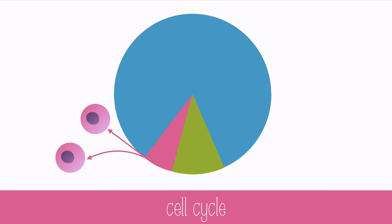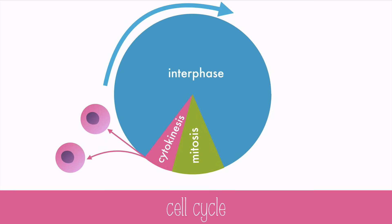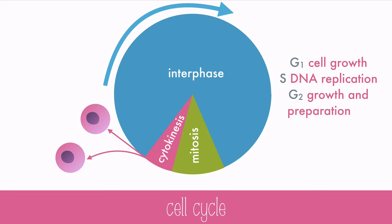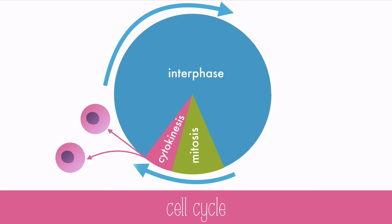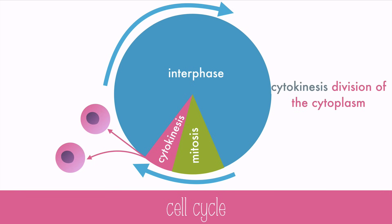Most of a cell's lifetime is spent doing its job during interphase, and only a small part of its life is spent dividing in mitosis and cytokinesis. Interphase is sometimes broken into three parts: G1 is where cell growth occurs, S is DNA replication, and G2 is growth and preparation for division. Mitosis is the division of the nucleus, and cytokinesis is the division of the cytoplasm. In the end, there are two identical cells called daughter cells, and the cycle can begin again.